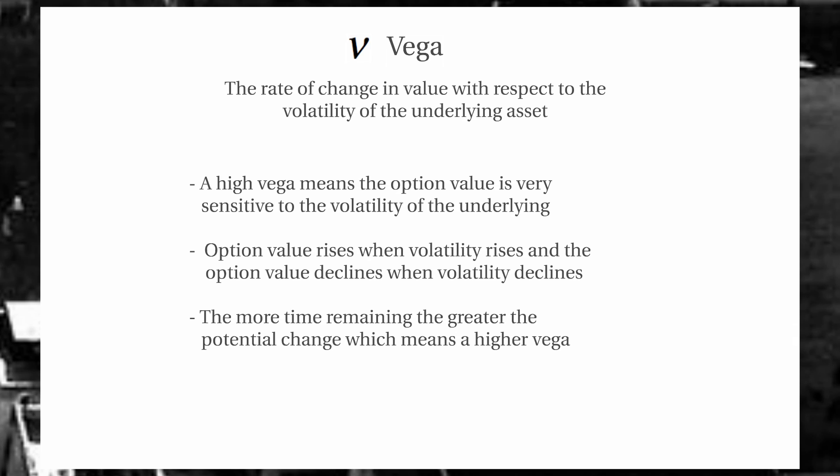Option value will also decline when volatility declines. The more time we have remaining on our option, the higher the potential for changes, which means we have a higher vega and more option value. And as we saw with theta, as our time remaining goes down, our possibility of different prices decreases, our volatility potential decreases, and we'll have a decrease in option value.